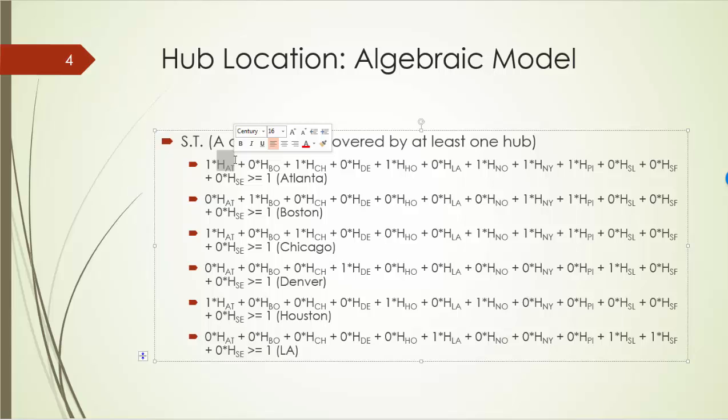Out of those five cities that are within 1,000 miles of Atlanta, including Atlanta itself, one of them must be a hub. That is to say, one out of HAT, HCH, H Houston, H New Orleans, H New York, and H Pittsburgh must be equal to one. If that is true, we guarantee that the sum will be greater than or equal to one. That is, Atlanta will be covered by at least one hub. And we do the same thing for all the other 11 cities, including Boston, Chicago, Denver, Houston.